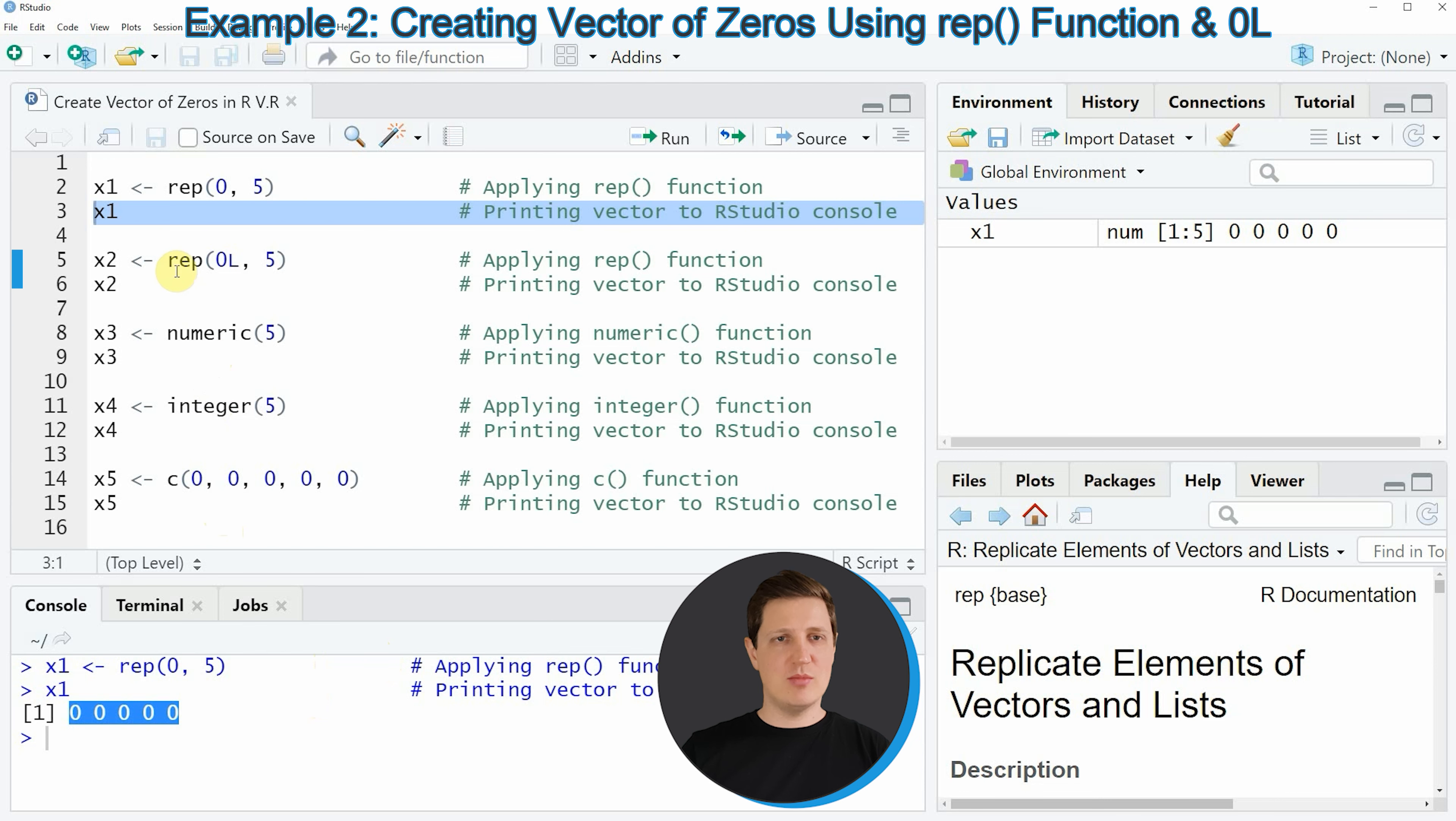In the second example I'm again using the rep function as you can see in line 5 of the code but then I'm not specifying the value 0, I'm specifying 0L.